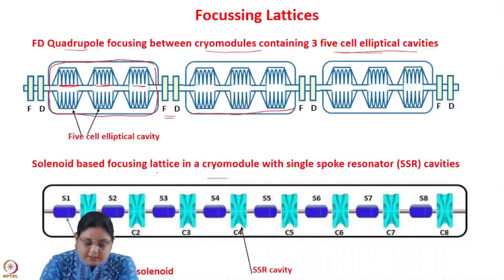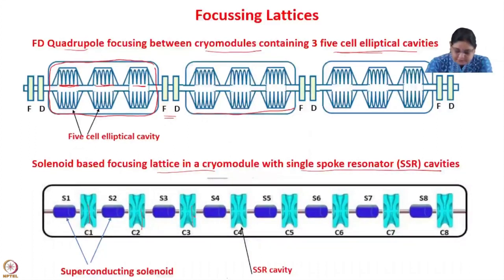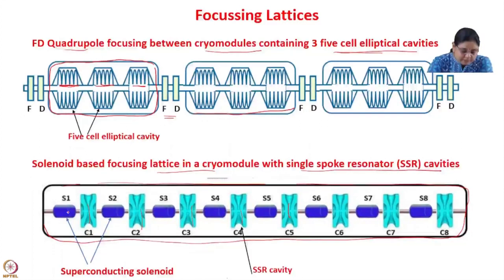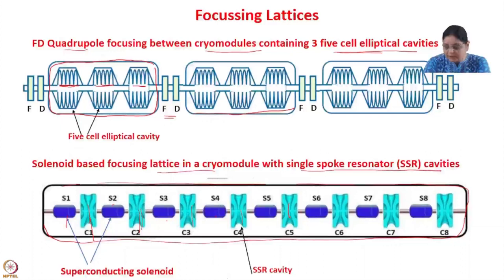Then there is solenoid-based focusing lattice in a cryomodule with single spoke resonator (SSR) cavities. SSR cavities are superconducting cavities placed inside the cryomodule, and in between the SSR cavities, solenoid magnets are used for focusing the beam. Everywhere we have periodic focusing — the focusing has to be throughout the linac and the focusing is periodic, so periodic focusing lattices are used for focusing the beam.